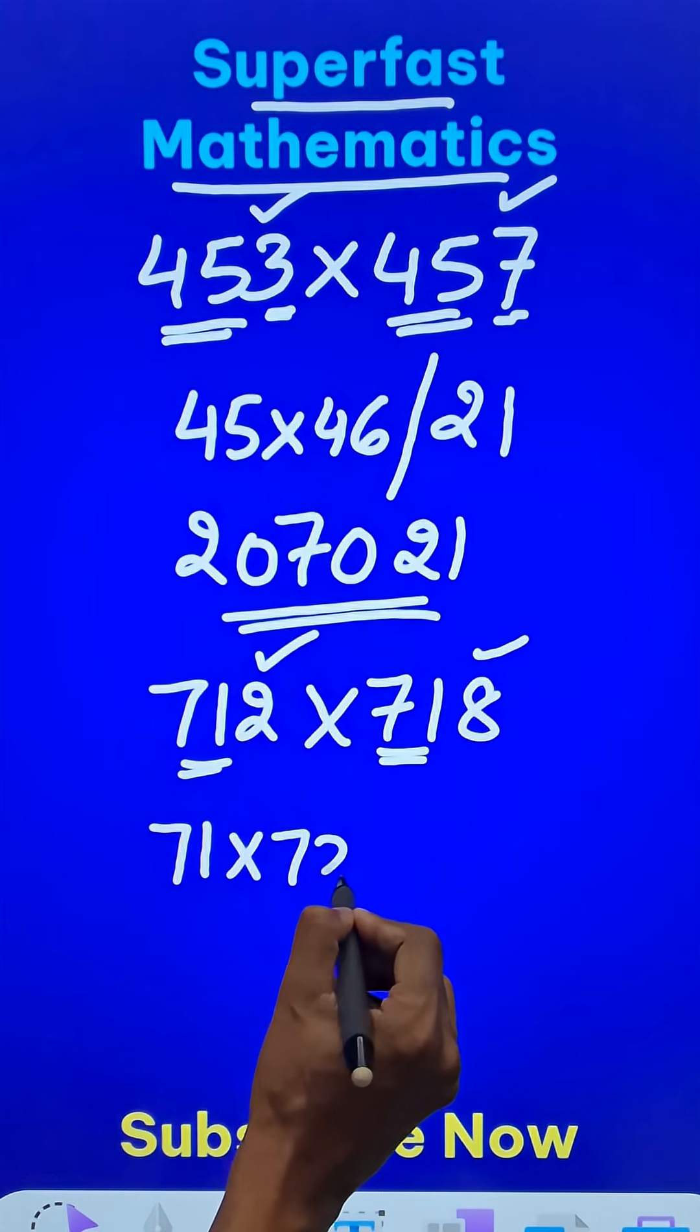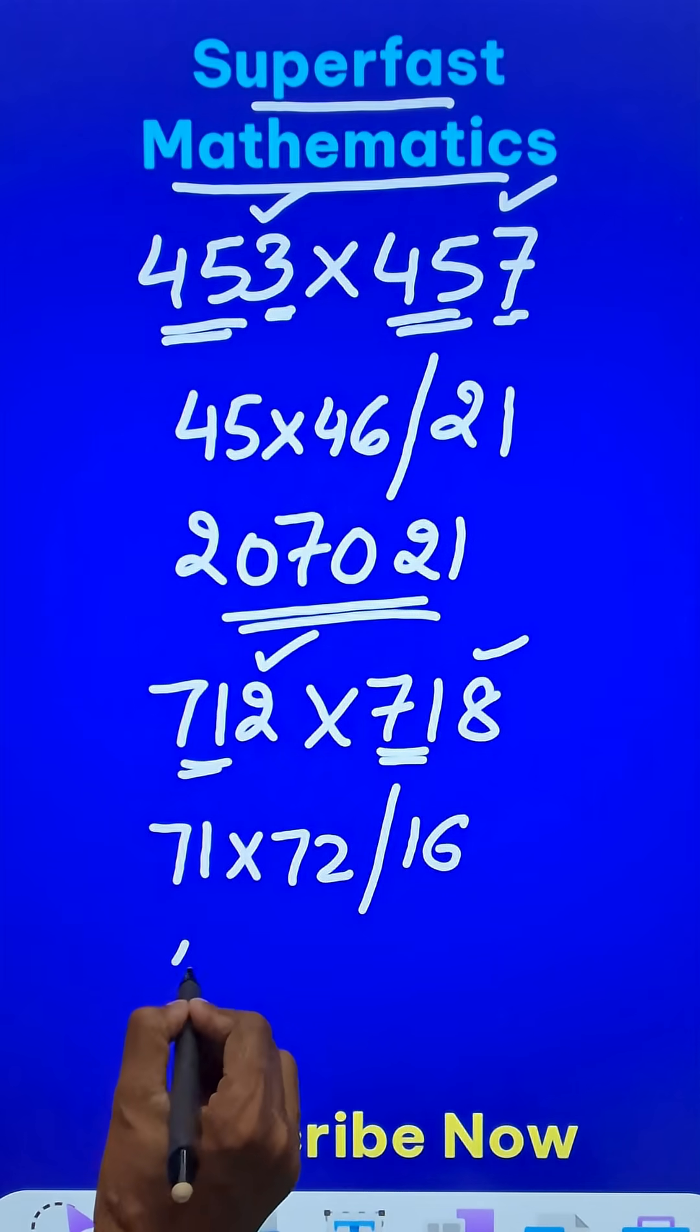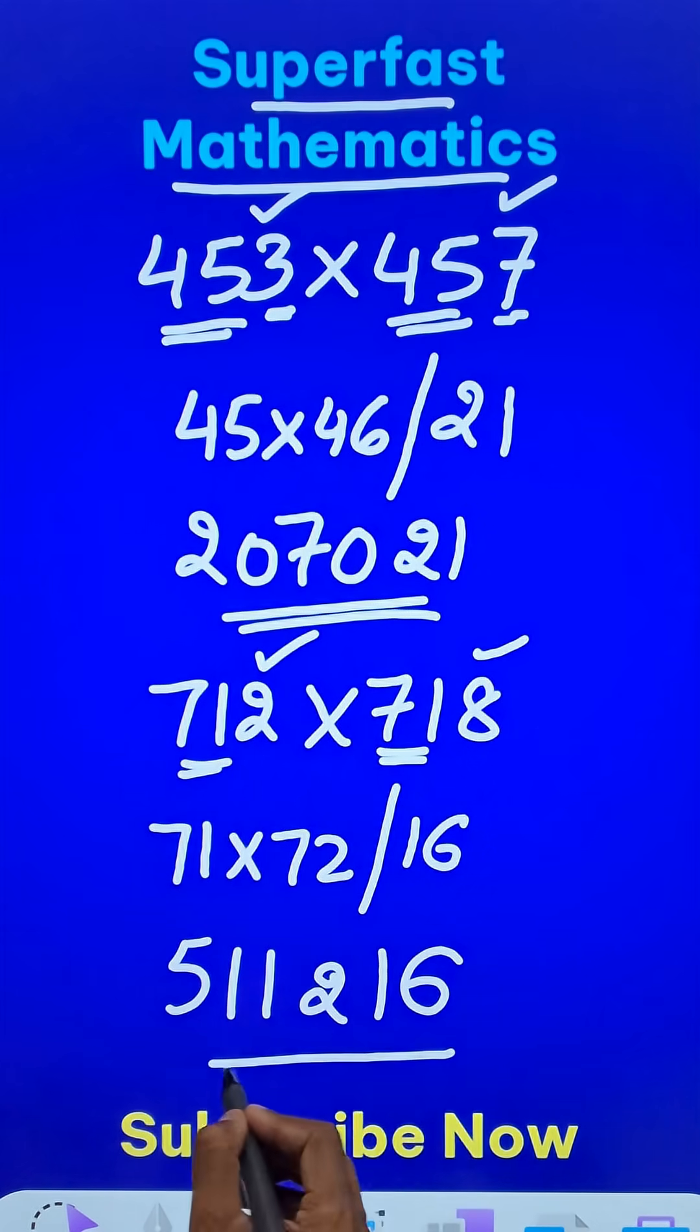So 71 times 72 and suffix what? 2 times 8, 16. So when you multiply these two, you get 5, 1, 1, 2, and suffix 16 to the result. You have the product of these numbers.